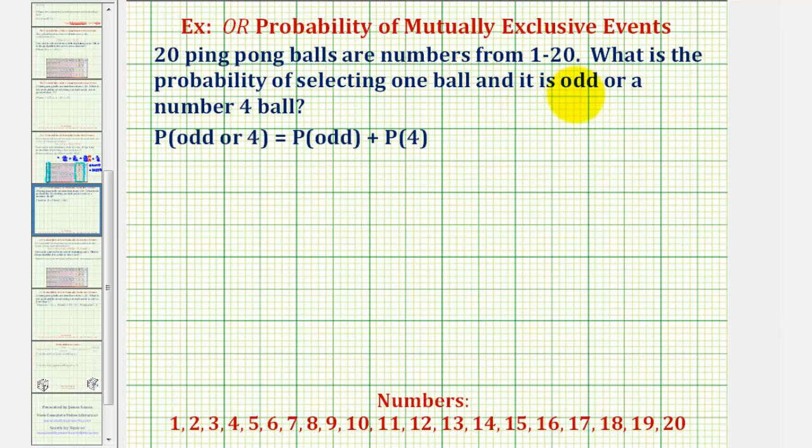Again, these two events are mutually exclusive because a ball cannot be both odd and the number four. Which means to find the probability, we just find the sum of the probability of the ball being odd and the probability the ball is a four.